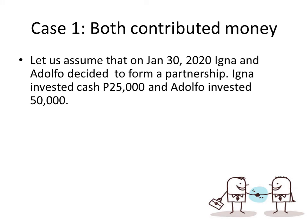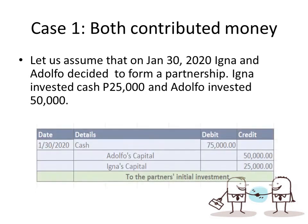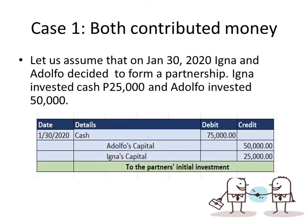Let's assume that on January 30, 2020, Igna and Adolfo decided to form a partnership. Igna invested cash $25,000 and Adolfo invested $50,000. The partnership receives cash of $75,000. So we record cash $75,000, credit Adolfo's capital $50,000 and Igna's capital $25,000 to record the partnership's initial investment.